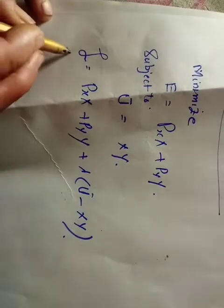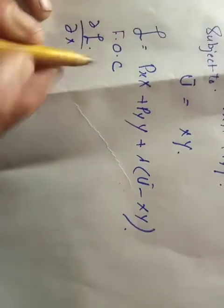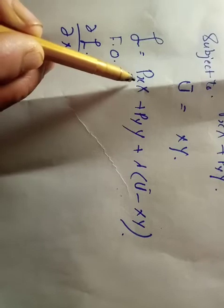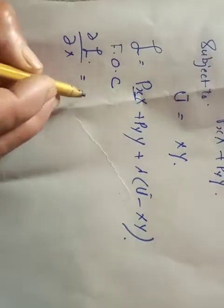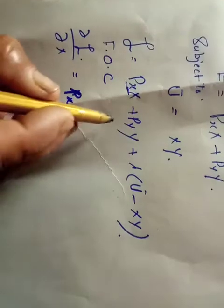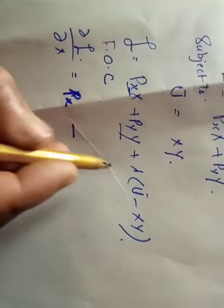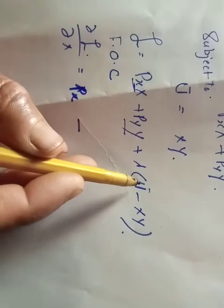Now applying the first-order condition — that is, setting the first-order partial derivatives equal to zero. We take the first-order derivative with respect to x, and then with respect to y. When we take the partial derivative with respect to x, we are left with px, because the partial derivative of x equals 1, and the derivative of the other term equals minus lambda times the utility function.